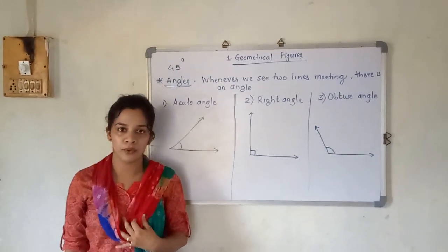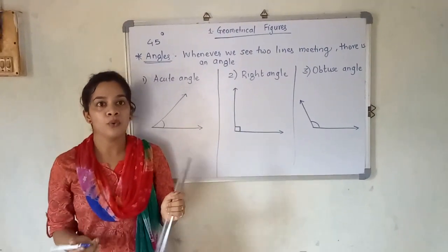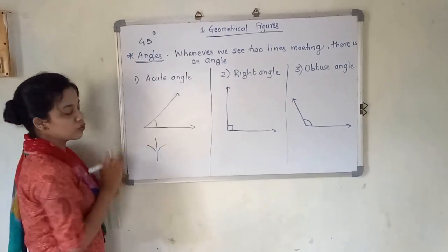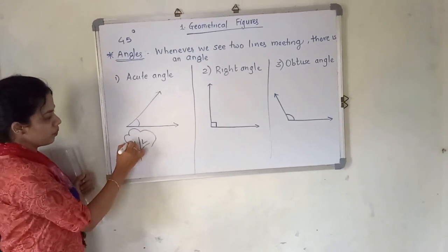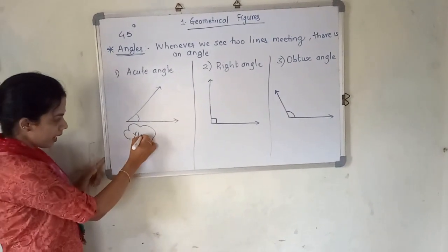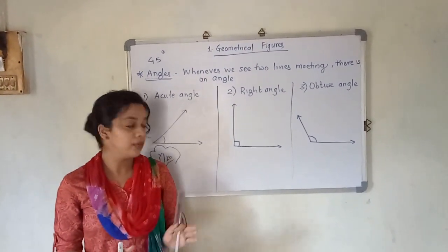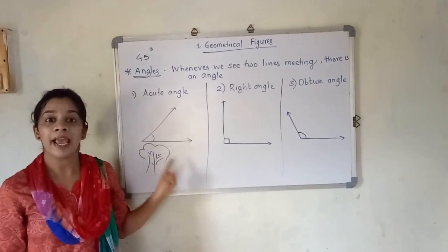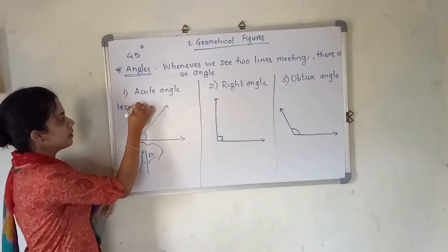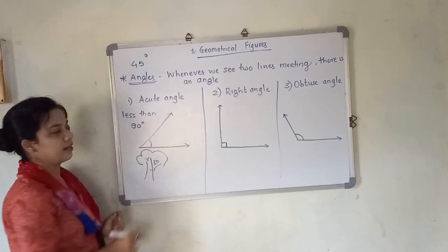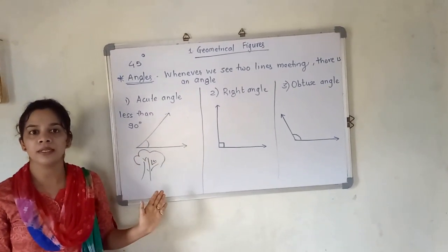First, we will study the acute angle. Think of a crocodile opening his mouth, or look at the branches of a tree — the angle formed there is an example. Acute angle means an angle which is less than 90 degrees. So what is an acute angle? It is that angle which measures less than 90 degrees.